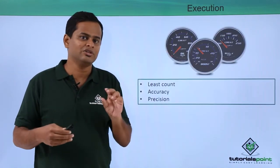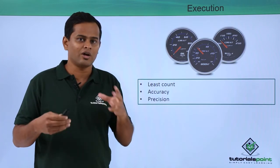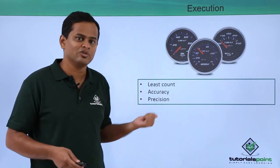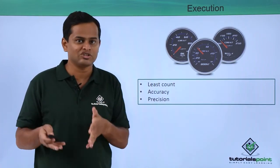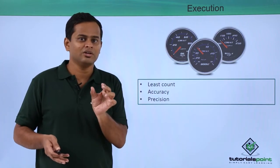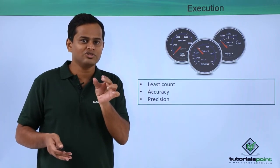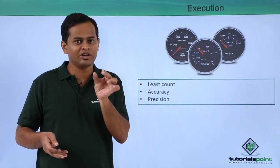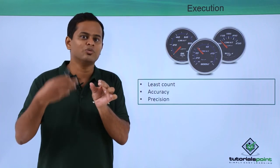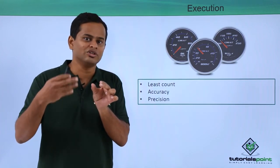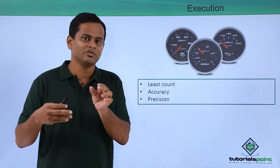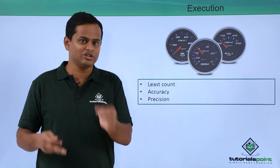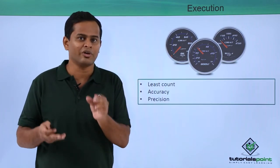From the execution point of view, there are various parameters of a measuring system we need to understand. The first one is the least count — that means the smallest increment or decrement that we can visualize on the scale of a measurement system. This is also called resolution.